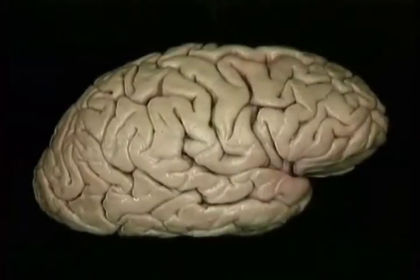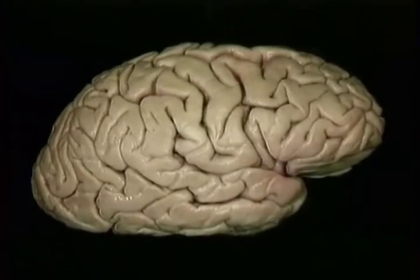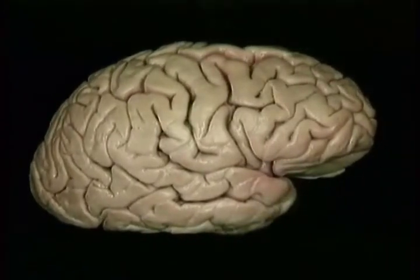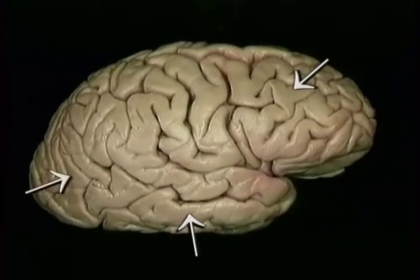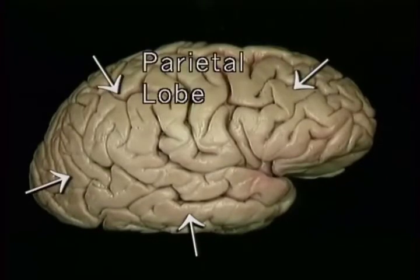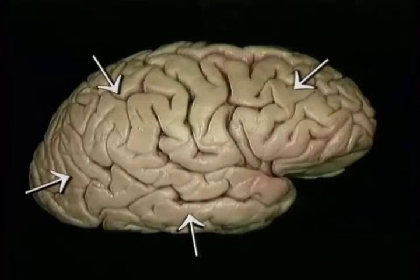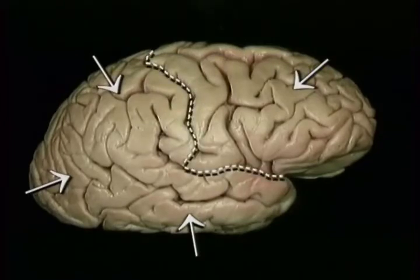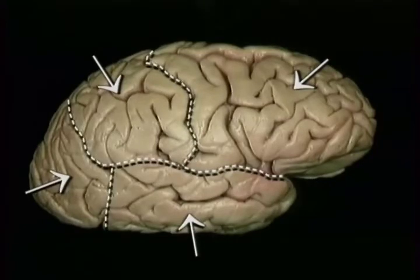The cerebral hemisphere is described as consisting of four lobes: the frontal, temporal, and occipital lobes that we've mentioned already, and the parietal lobe. Between the frontal lobe and its neighbours, the central and lateral sulci form natural boundaries. The other boundaries are somewhat arbitrary.